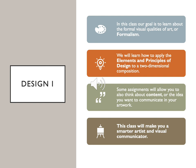In this class, our goal is to learn about the formal visual qualities of art, or formalism. We will learn how to apply the elements and principles of design to a two-dimensional composition. Some assignments will also allow you to think about content, or the ideas you want to communicate in your artwork. But one thing is for sure — this class will make you a smarter artist and a better visual communicator.